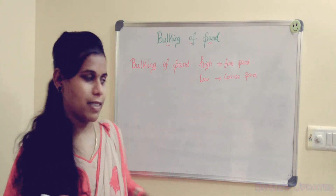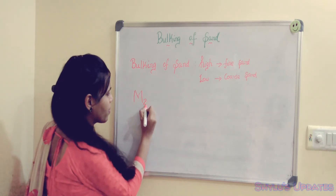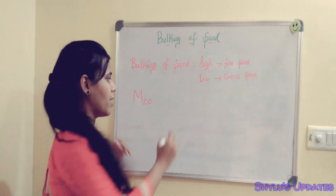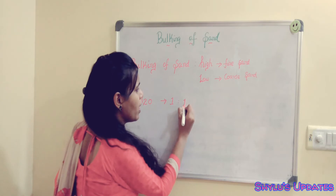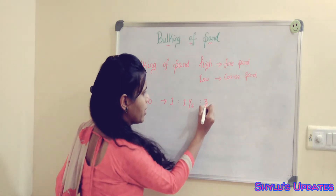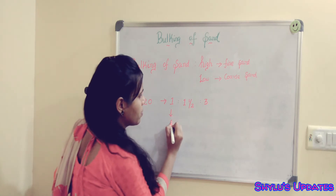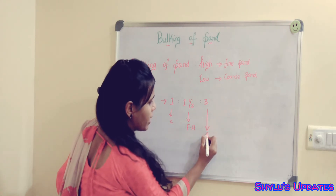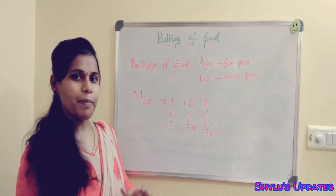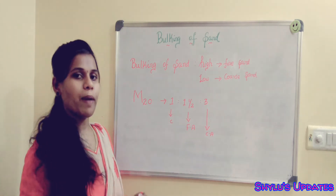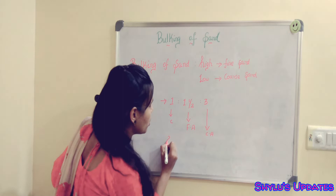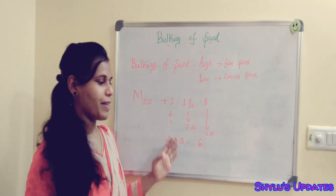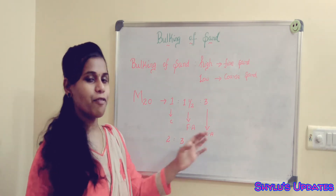Let's see an example. Consider M20 concrete mix. The ratio for M20 concrete mix is 1 : 1.5 : 3 — that is, 1 part cement, 1.5 parts fine aggregate, and 3 parts coarse aggregate. When we multiply this ratio by 2, we get 2 : 3 : 6, which means 2 parts cement, 3 parts fine aggregate, and 6 parts coarse aggregate.